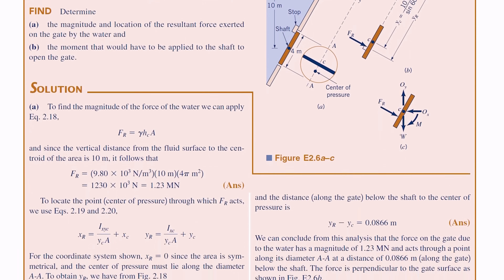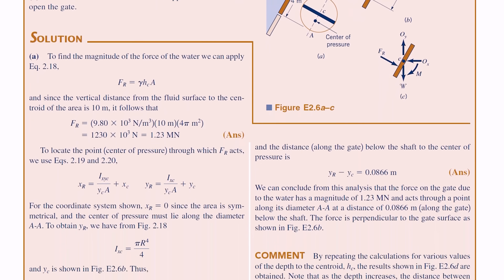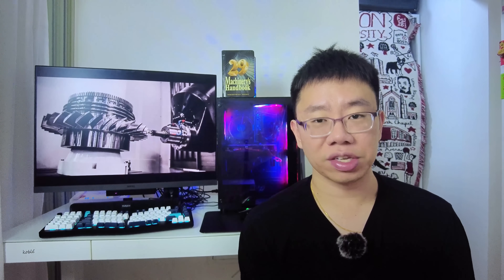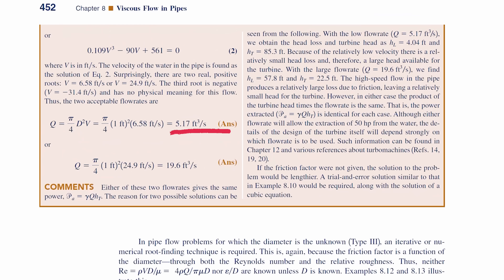Textbook problems are clean and fully defined. You're given all the information you need and exactly what to solve for. There's always going to be one correct answer. Real mechanical engineering problems aren't like that. They're ambiguous, multifaceted, full of constraints and trade-offs, and solved together by a multidisciplinary, cross-functional team.